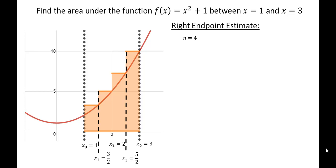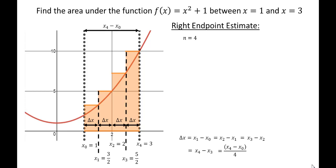In order to find the area of these rectangles we need to know the width, which we call delta x. Delta x is the width of one rectangle. We can find delta x by taking x one minus x zero, and since we divided this into four rectangles of equal width, the more common approach is to take the whole width of the interval — x four minus x zero — and divide by the number of rectangles, 4. That gives us delta x, the width of each rectangle.